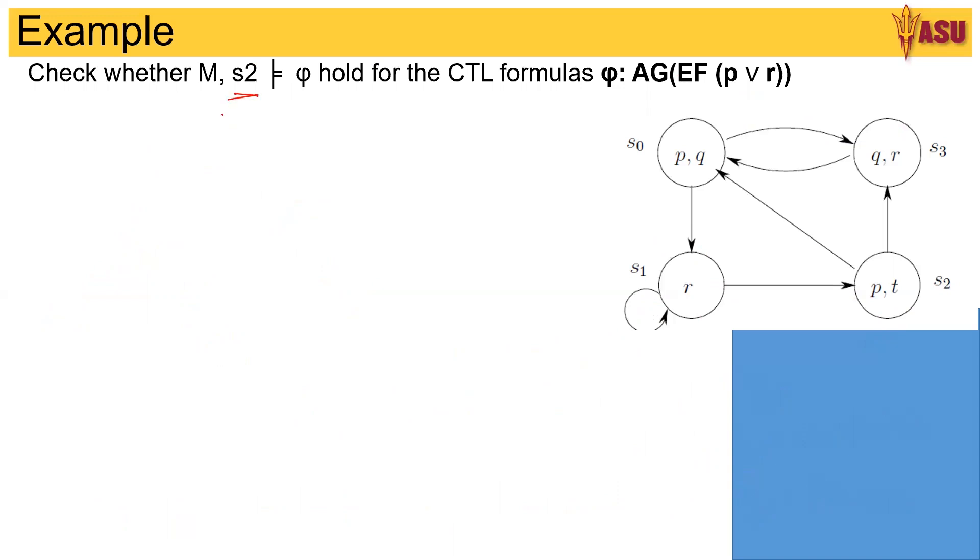Here it is s2. From s2, all paths globally have as their next, there exists one path in the future which has either p or r.